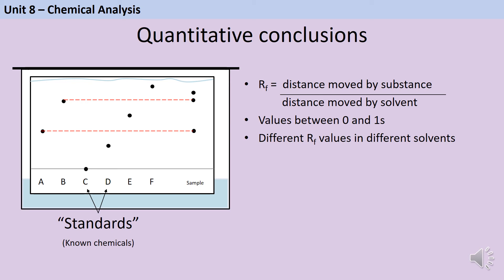At the other end of the spectrum, if we had a substance like the standard C here which was completely insoluble and didn't move off the start line at all, then we would have an RF value of 0. And then most substances are going to fall somewhere between those.